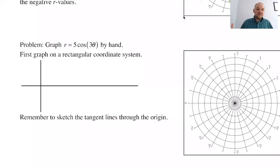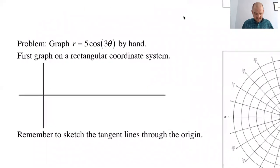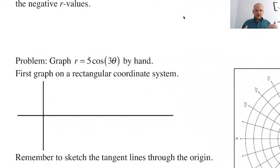I'm back. We're still on page 207. We're going to graph another rose curve by hand. So r equals 5 cosine 3 theta. N is equal to 3, so I'm expecting there to be 3 petals. To get 3 petals, I'm going to need 6 increments.